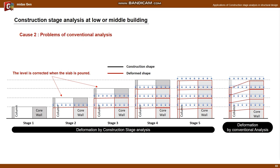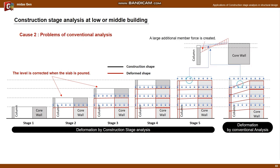In conclusion, the error occurs because conventional analysis does not take into account the structural characteristics that occur during construction. And to design safely, other solutions such as construction stage analysis should be considered. Therefore, in the case of conventional analysis, a large relative displacement between the core wall and column cannot be considered, and the large member force is added. So we cannot design normally under conventional analysis.